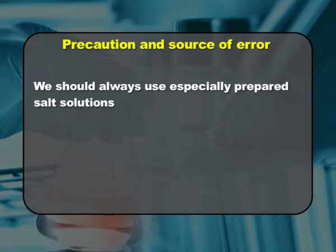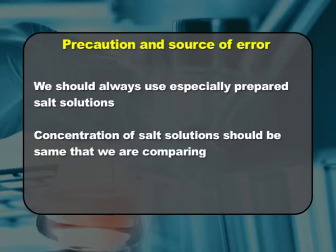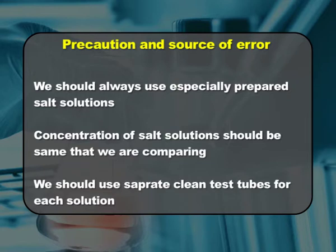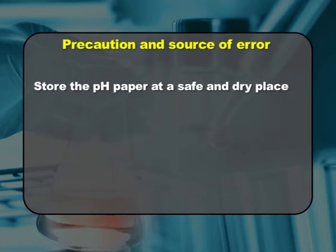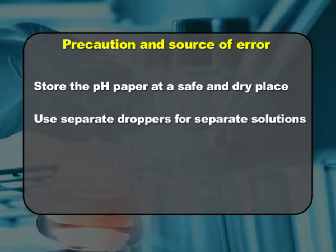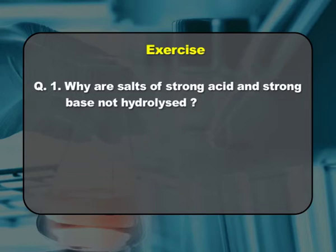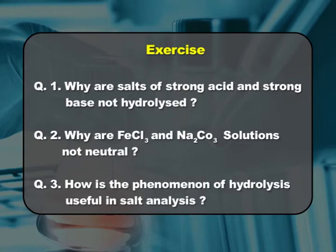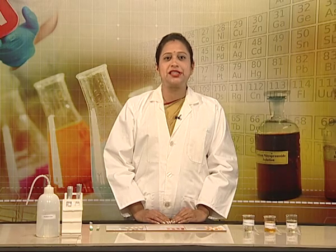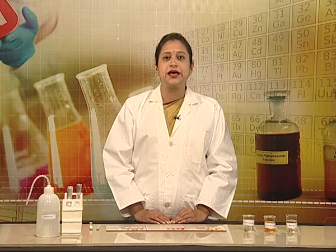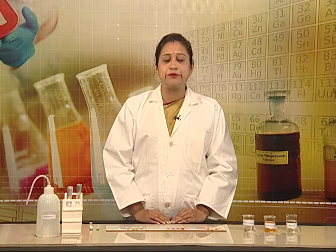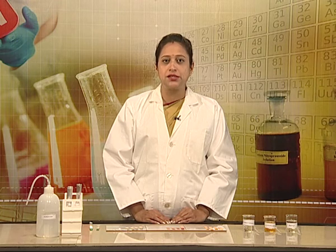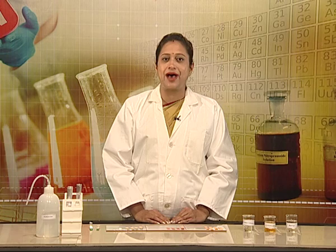While conducting these experiments, we have certain precautions: always use freshly prepared salt solutions; the concentration of salt solutions being compared should be the same; use separate clean test tubes for each solution; store pH paper at a safe and dry place; and use separate droppers for separate solutions. As an exercise, consider: why are salts of strong acid and strong base not hydrolyzed? Why are ferric chloride and sodium carbonate solutions not neutral? And how is hydrolysis useful in salt analysis? Today we have learned how to determine the pH of different salt solutions and the effect of dilution on their pH values. Thank you.